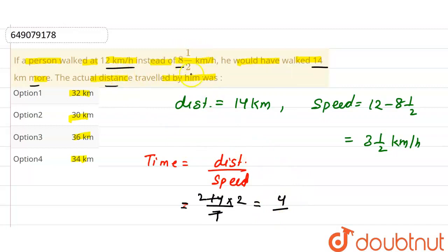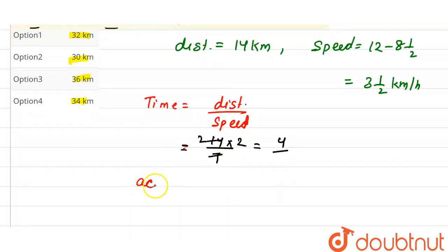At 8½ km per hour for 4 hours, the actual distance equals speed times time. So speed is 8½ km per hour.